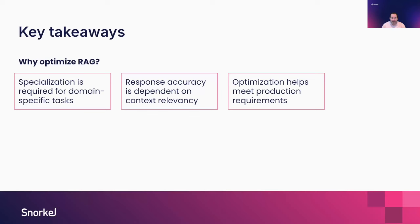More specifically around RAG, whether or not responses are acceptable depends entirely on whether or not the context is correct and complete. This is ultimately needed to help us get to production. We can start with an out-of-the-box RAG pipeline and may see accuracy spanning anywhere from 25% to 50%, which helps us get started with a POC. But if you're trying to get to 75, 85, or 95% accuracy, a degree of optimization is going to be required.